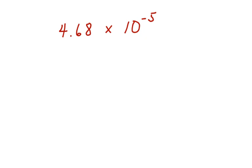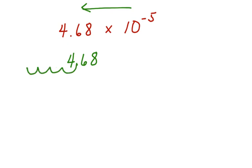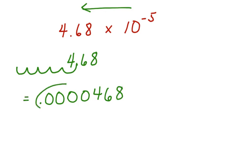Here we have 4.68 times 10 to the negative 5th power. Again, we're going to move our decimal point to the left. Let's rewrite: 4.68. We're going to move it five places: 1, 2, 3, 4, 5. We have four zeros, and then the rest of our number. And this is our answer: 0.0000468.